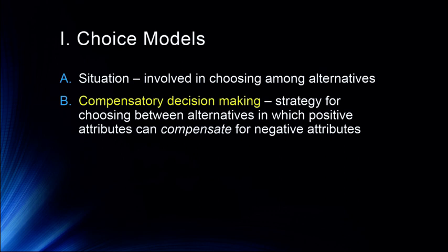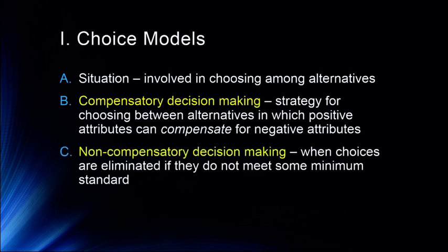Compensatory decision-making is a strategy for choosing between alternatives in which positive attributes can compensate for negative attributes. While it might not have all the features you want in a car, it gets the gas mileage you want. In non-compensatory decision-making, we eliminate choices if they do not meet some minimum standard, and we often use it to narrow down the field.